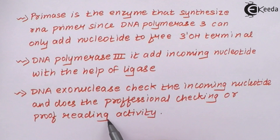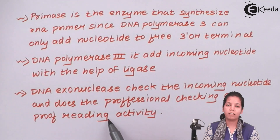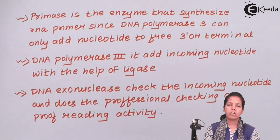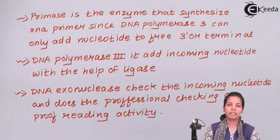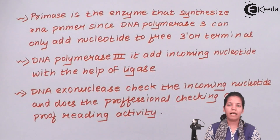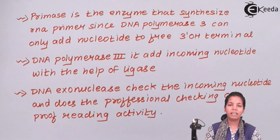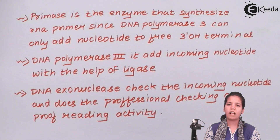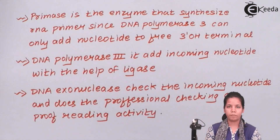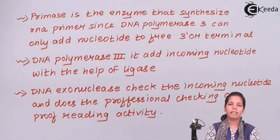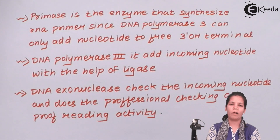After proofreading, your DNA replication is completed thoroughly. In this part of the chapter, we studied the enzymes used in DNA replication: helicases, SSB proteins, primases, DNA polymerase 3, and DNA exonucleases. DNA exonucleases are also sometimes called DNA polymerase 1. I hope you are all clear with this concept of the requirements for DNA replication. Thank you.